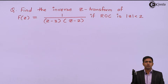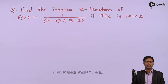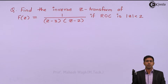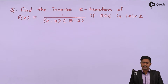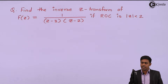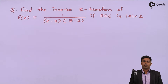Hello friends. In this problem we have to find out the inverse z-transform of F(z) = 1 / [(z-3)(z-2)], given that the region of convergence is |z| < 2.